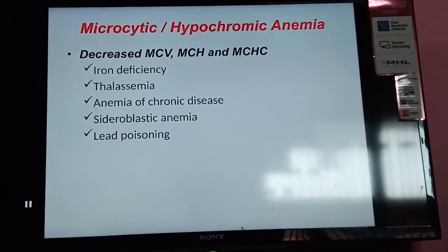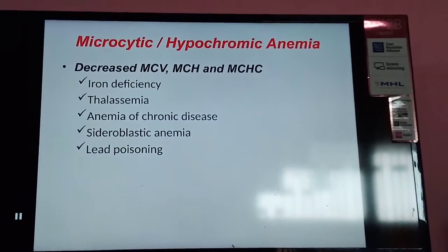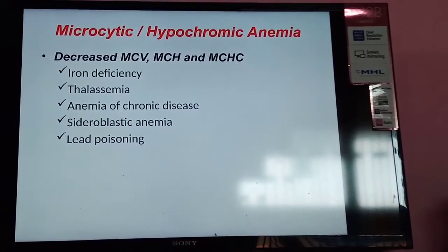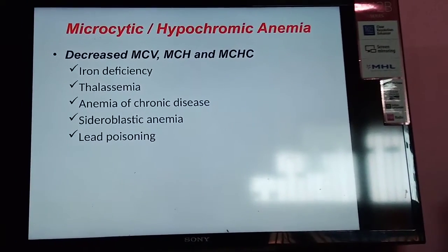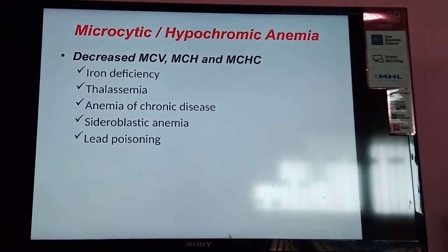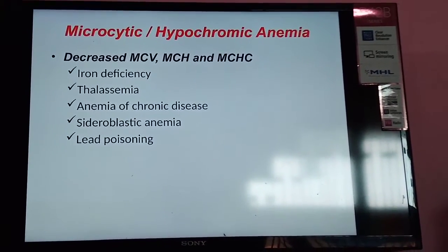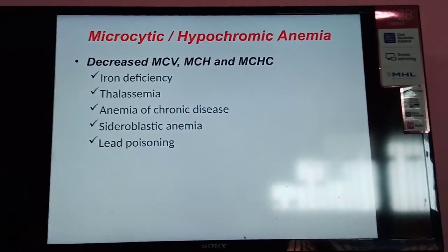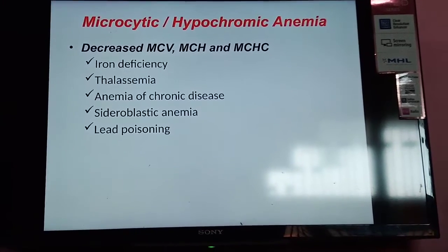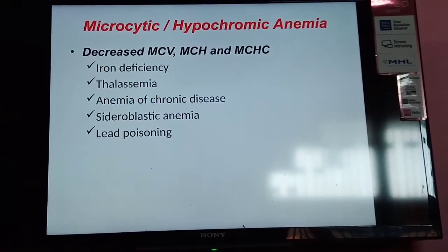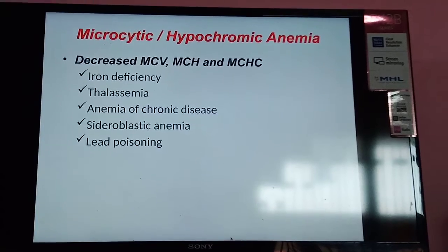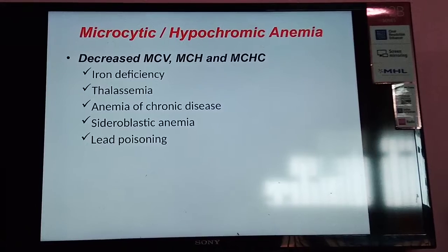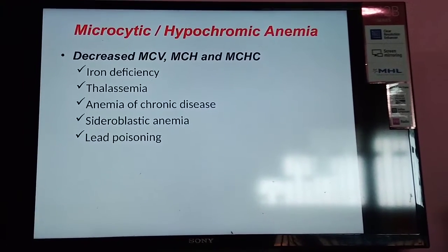Now moving to morphological classification. The first type is microcytic hypochromic anemia. Normally, RBC size is 7.7–8 micrometers in diameter with a lifespan of 110–120 days. In microcytic hypochromic anemia, there is a decrease in MCV, MCH, and MCHC.